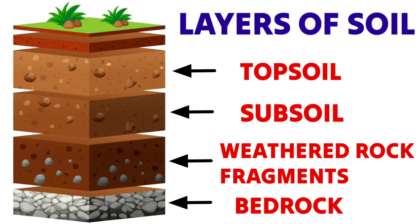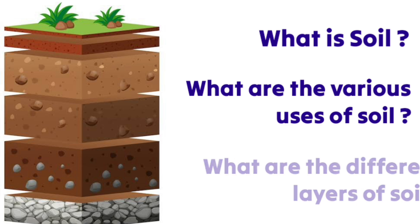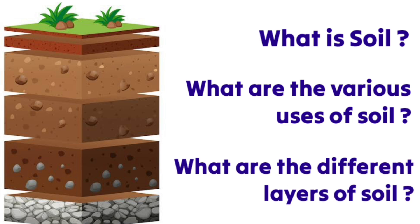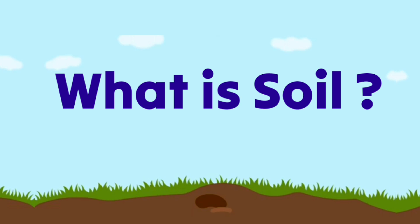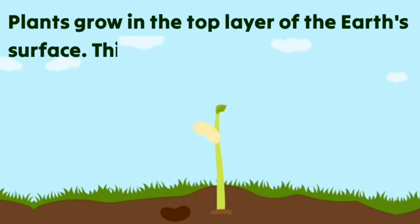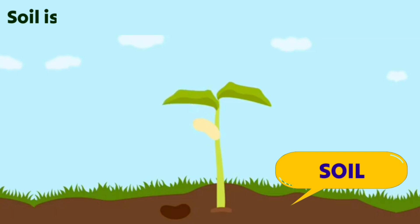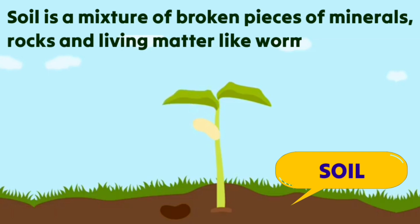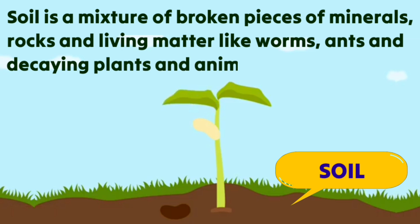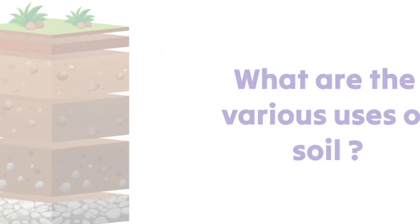In this video we are going to learn about what is soil, what are the various uses of soil, and what are the different layers of soil. Plants grow in the top layer of the earth's surface, which is known as soil. Soil is a mixture of broken pieces of minerals, rocks, and living matter like worms, ants, and decaying plants and animals.